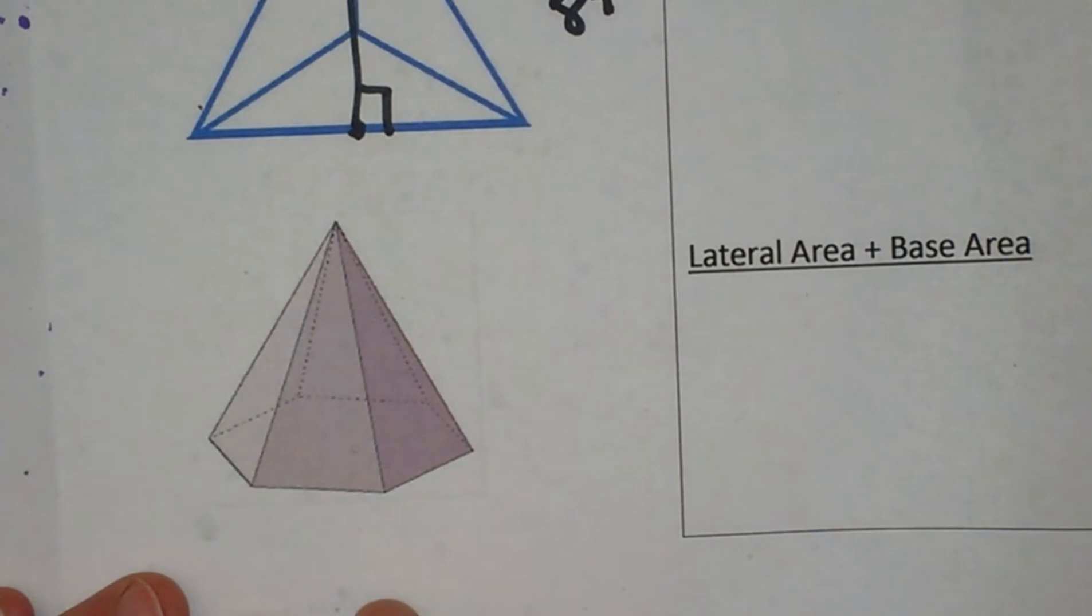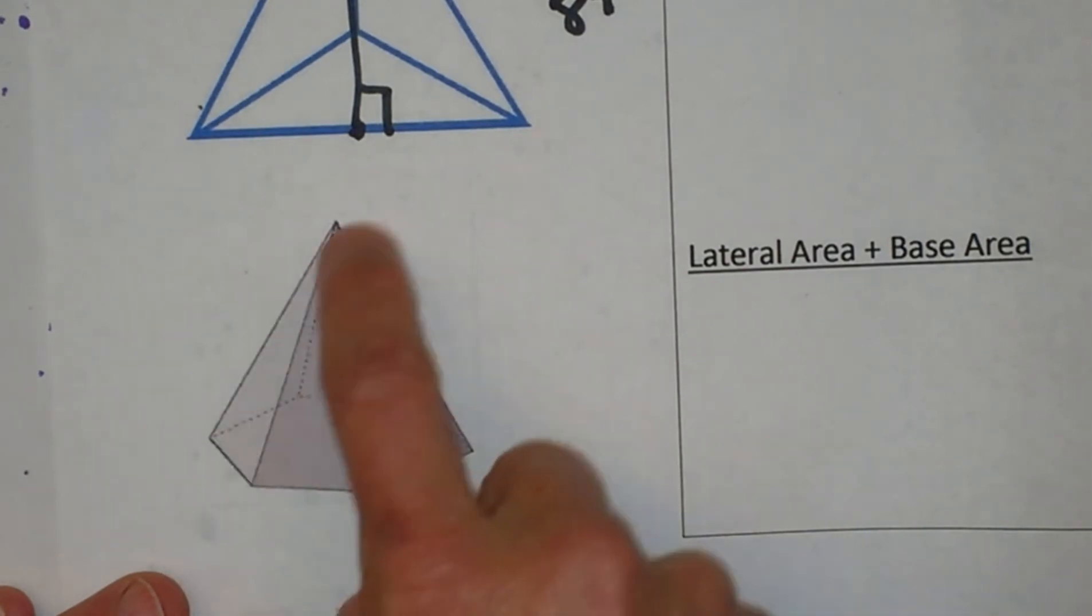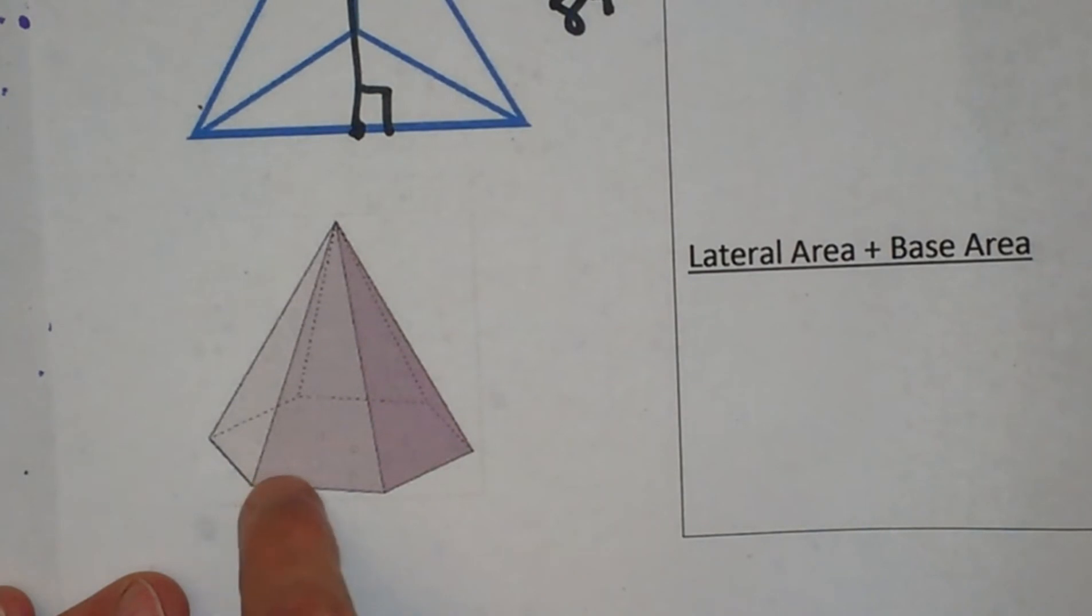Now let's focus for a second. How many triangles make up a hexagonal pyramid? Well, each side of the base has a corresponding triangle. So since this is a hexagon, we have six triangles going around to create this pyramid.